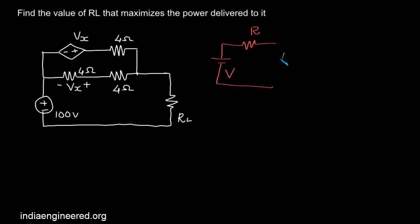Then the maximum power is transferred when R is equal to RL. That means when these two values are equal, we can transfer maximum power to the resistance.